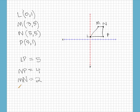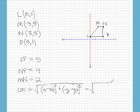The last distance LM we have to use the distance formula. The distance formula is √[(x₁-x₂)² + (y₁-y₂)²]. We're going to plug in our points. L is (0,1) and M is (3,5). So we're going to go (0-3)² plus (1-5)².